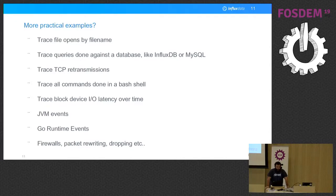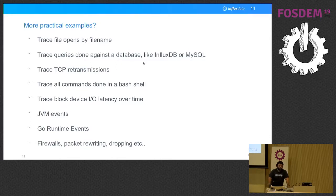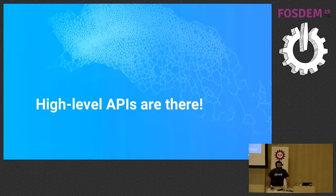More practical examples include: trace file open by filename, Go runtime events, XDP firewalls and packet rewriting, tracing commands in a bash shell, writing a keylogger. One of the use cases I use a lot — since I work for InfluxDB — is tracing queries made against the database. I don't work on the InfluxDB core, so I don't want to modify their code. Instead, I just load an eBPF program to see what's happening.